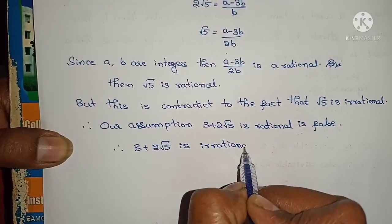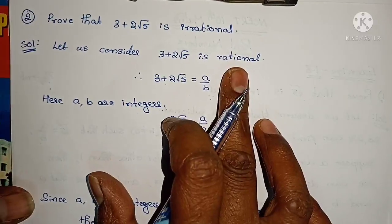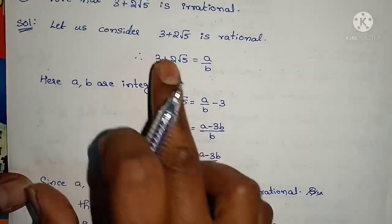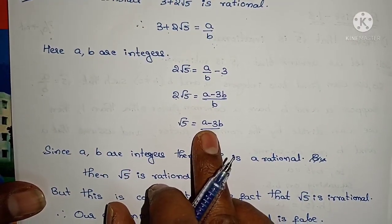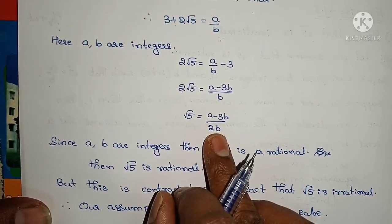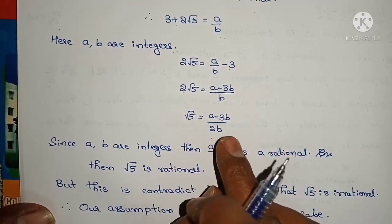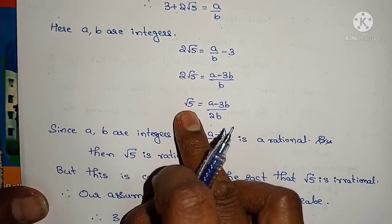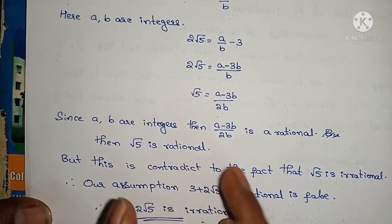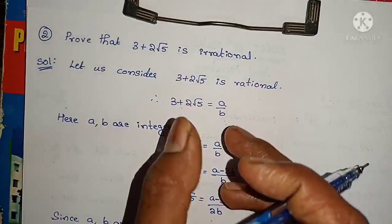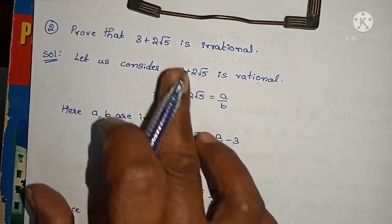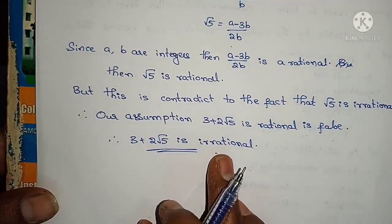To summarize: I considered 3 + 2√5 as rational and wrote it as a by b. Rearranging gave root 5 = (a − 3b) / 2b. Since a and b are integers, this expression is rational, which would mean root 5 is rational — but root 5 is irrational. This contradiction proves that 3 + 2√5 is irrational.